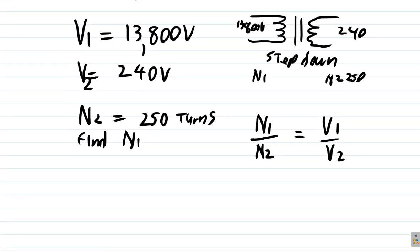So N1, whatever that is we don't know, divided by N2, the number of turns on the secondary which is 250, is equal to V1, 13,800, divided by V2, 240. So you do your calculation.